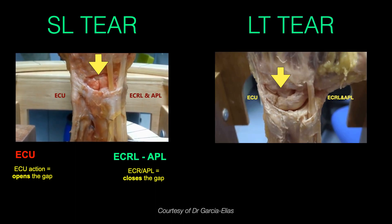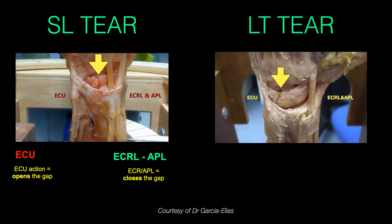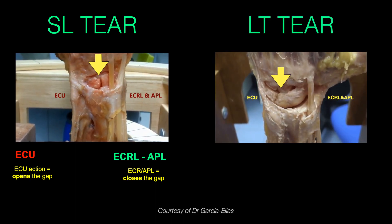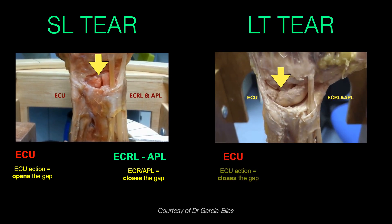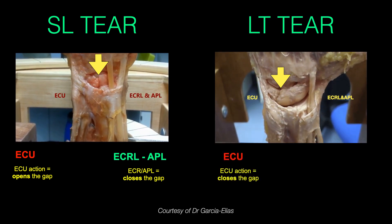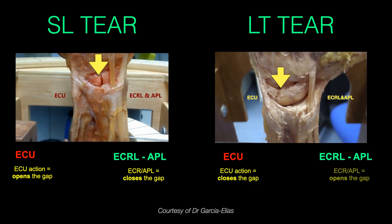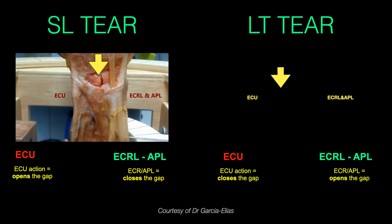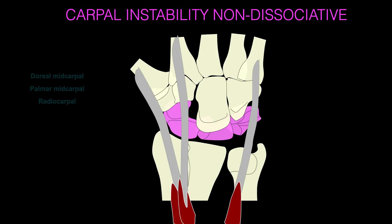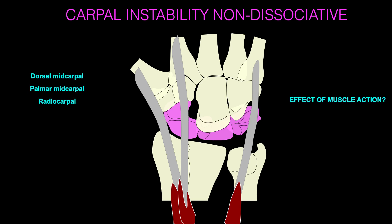Conversely, in a lunotriquetral tear, ECU activation will close the lunotriquetral gap, whereas ECRL and APL action will open it. What about non-dissociative mid-carpal instability? What is the effect of muscle action there?